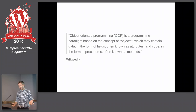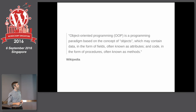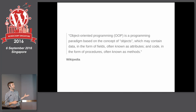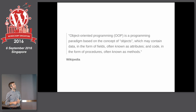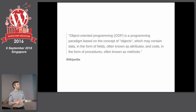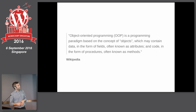So what is object-oriented programming? This is the definition on Wikipedia. OOP is a programming paradigm based on the concept of objects, which may contain data in the form of fields — often known as attributes — and code in the form of procedures, often known as methods. If you're a programmer, that might sound logical. If you aren't, that might sound like complete jargon.